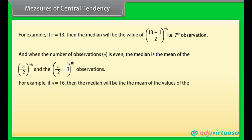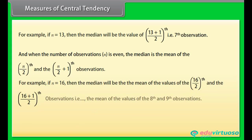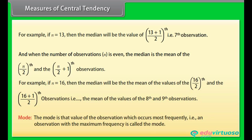For example, if n = 16, the median is the mean of the values of the 8th and 9th observations. Mode: The mode is that value of the observation which occurs most frequently — that is, an observation with the maximum frequency is called the mode.